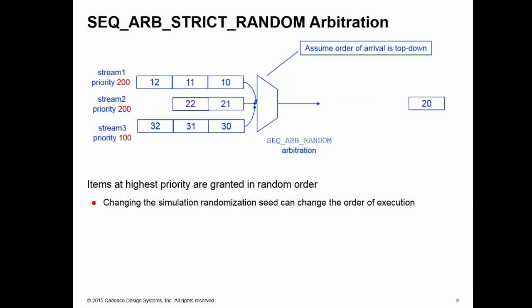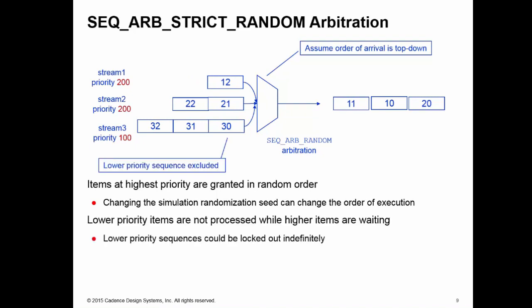So now I'm picking between 10 and 21. Stream 1 then backs that up with 11, so again I'm picking between those two items, 11 and 21. Because stream 1 and 2 are constantly creating data, I have the problem that stream 3 is locked out completely. You have to bear this in mind if you choose this arbitration scheme.